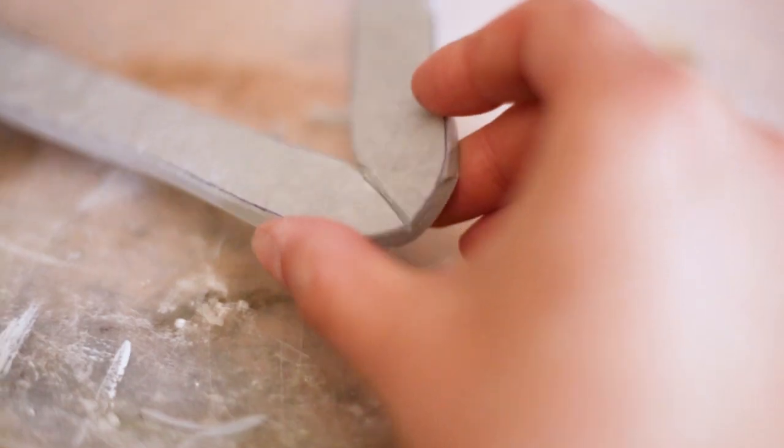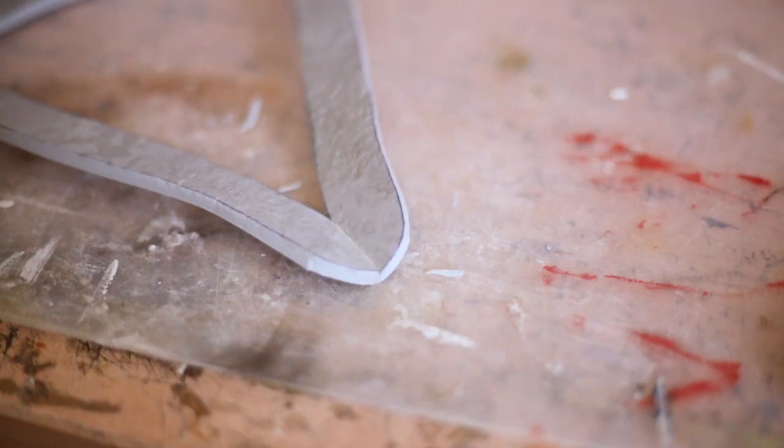The crown part of Arthur's hat has a little crease which I imitated by cutting a little bevel out of the material before gluing it back together.